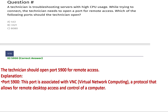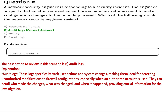The next question is: a network security engineer is responding to a security incident. The engineer suspects that an attacker used an authorized administrator account to make configuration changes to the boundary firewall. Which of the following should the network security engineer review? Option A: network traffic logs, Option B: audit logs, Option C: CC logs, Option D: event logs. The correct answer is Option B, audit logs.